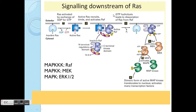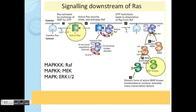Details about the downstream signaling of RAS: RAS is again a switch, GDP to GTP to be activated. One of the most famous specific examples of MAPK is called ERK, ERK1/2. ERK signaling is very important for cell proliferation and growth. The specific pathway flows from RAS to RAF, then to MEK, and lastly to ERK1/2. There are different members for each type of MAPK, MAPKK, and MAPKKK, but this RAS-RAF-MEK-ERK is one of the most classical MAPK pathways.